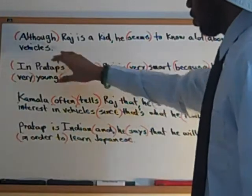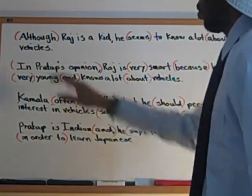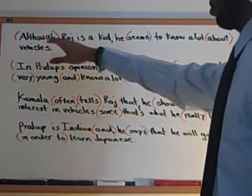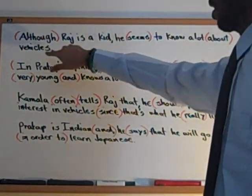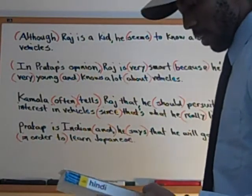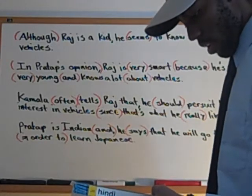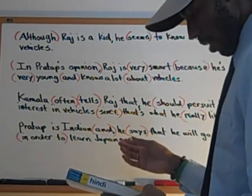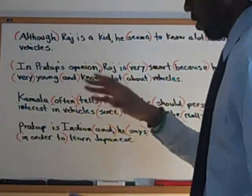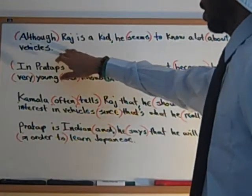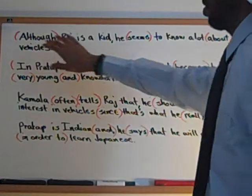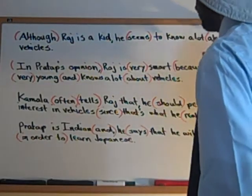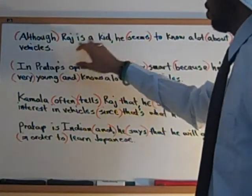For example, this is all from the dialogue — I just made it all coming from the dialogue. 'Although Raj is a kid, he seems to know a lot about vehicles.' 'Although' is a keyword, 'seems' is a keyword, 'about' is a keyword. The reason I chose this sentence is because they mentioned something about a Japanese car, and Raj said it's not a Japanese car. So I thought, 'what can I use from this dialogue?' I use 'although' because it's a keyword and I want to talk about Raj, and all this is based off this dialogue.